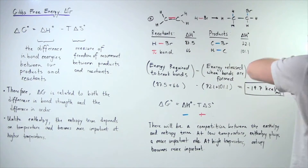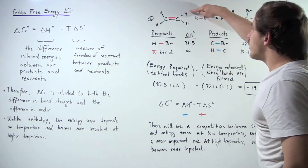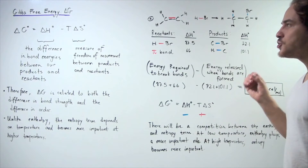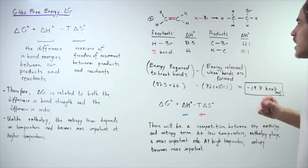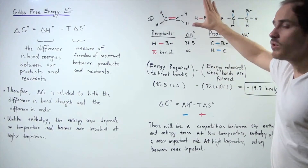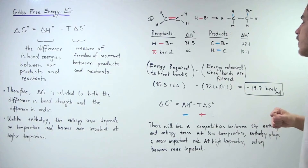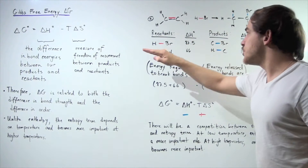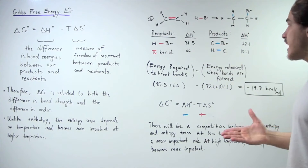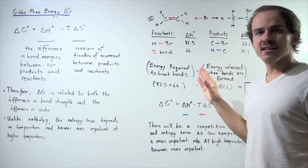Let's suppose we have the following reaction: an alkene reacts with hydrobromic acid to produce the following alkyl bromide. Let's calculate what the change in H of our reaction is. Let's begin with our reactant side and determine which bonds are broken. We have this pi bond break and this HBr bond break. The energy required to break the HBr bond is 87.5 kcal/mol, and the energy required to break the pi bond is 66 kcal/mol.